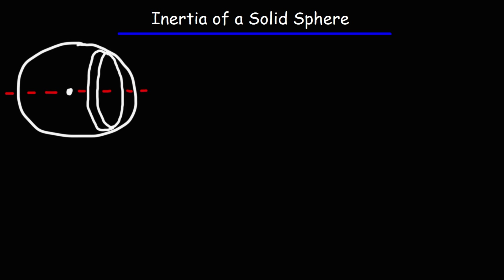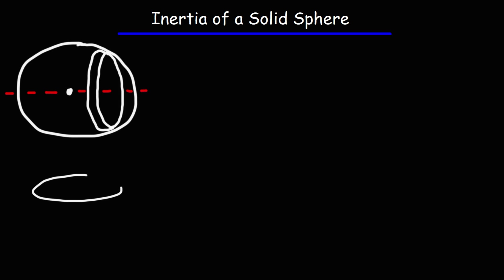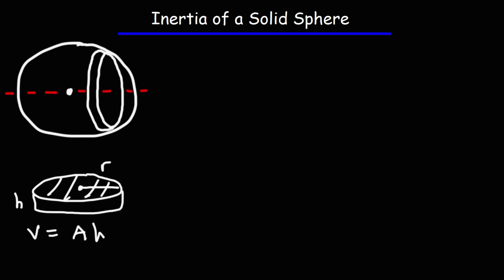We're going to break up the sphere into cross-sections. What we have here is a very thin disk, which looks like a cylinder with radius lowercase r and height h. The volume of a cylinder is the area times the height, and the cross-sectional area is the area of a circle, which is πr². So we get the volume of a cylinder is πr² times h.